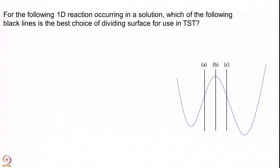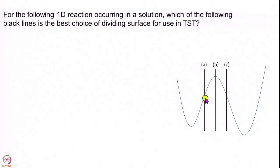This is a conceptual question. For the following one-dimensional surface in solution at some temperature T, where should I draw the transition state dividing surface? Is it best to draw it at position A, at position B, or at position C? Take a pause, think about it, and come up with your own answer.